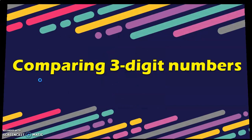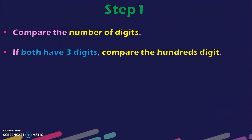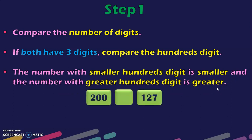Now let us go into the comparison of 3-digit numbers. The first step is to compare the number of digits. Suppose both have 3 digits, then the next step is to compare the 100s digit. The number with the smaller 100s digit is smaller and the number with the greater 100s digit is greater. For example, 200 and 127: both are 3-digit numbers, and in the 100s digit we have 2 and 1. Since 2 is greater than 1, 200 is greater than 127.